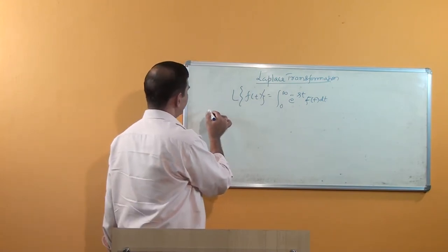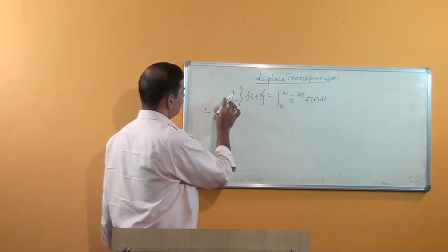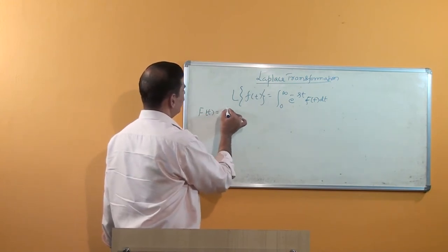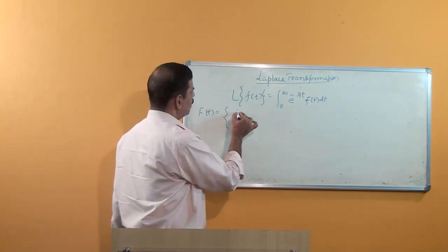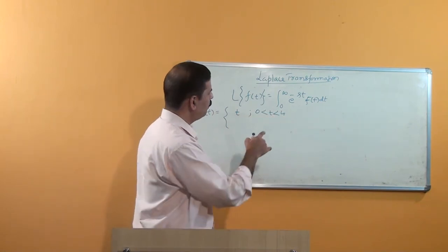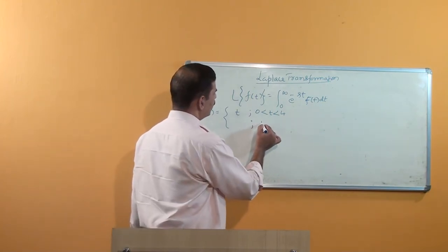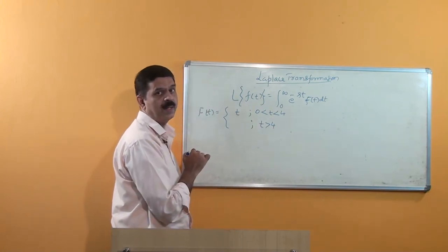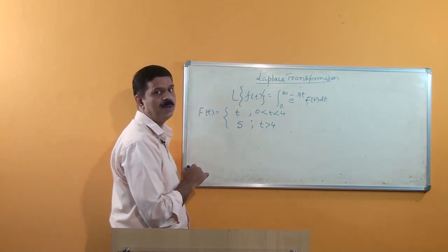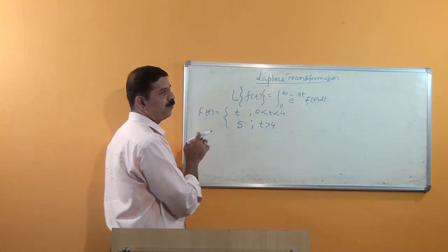In this problem, we are asked to find the Laplace transform of a piecewise defined function. Here f(t) is defined as: f(t) equals t for t between 0 and 4, and f(t) equals 5 for t greater than 4, meaning the function takes the value 5 for the rest of the interval up to infinity. In this case also, we can apply the Laplace transform to the given function.